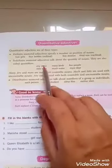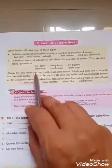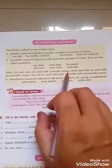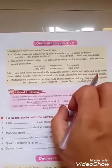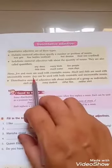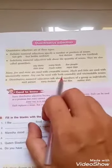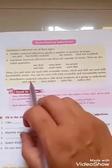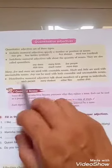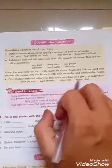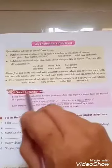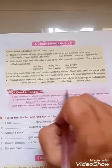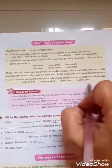They are indefinite because many, few, and more are used with countable nouns; much and little are used with uncountable nouns; any can be used with both countable and uncountable nouns. Distributive numeral adjectives talk about numbers of a group or individuals — for example: each person, every student, either film, neither shirt.